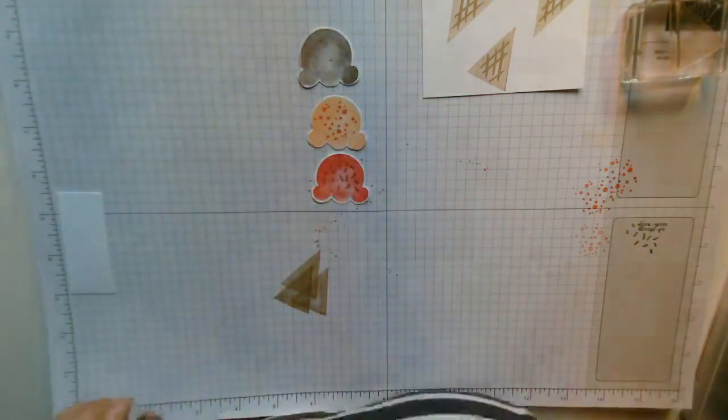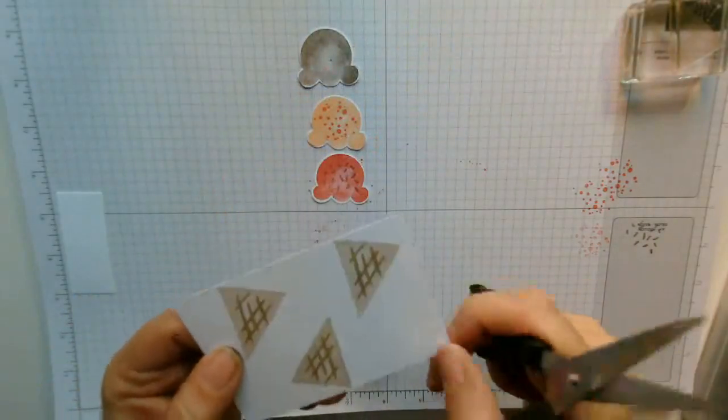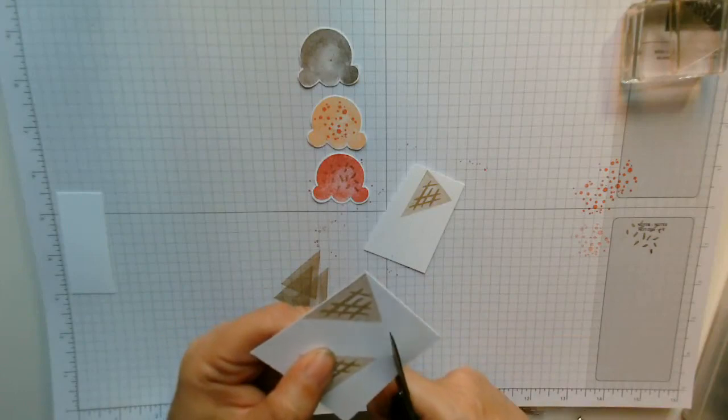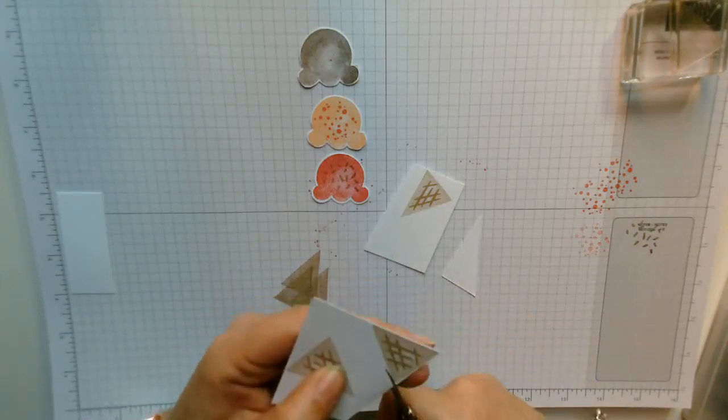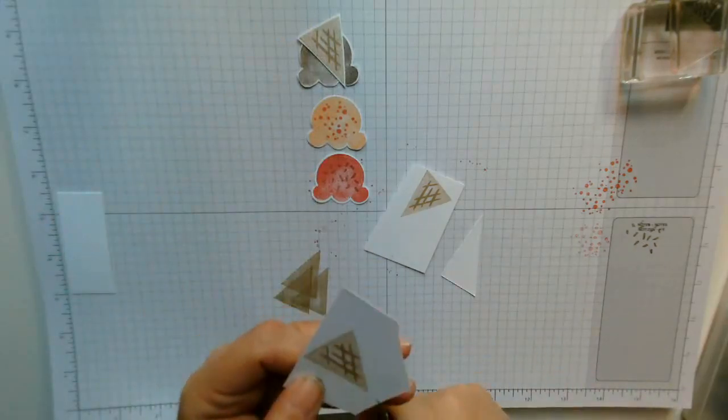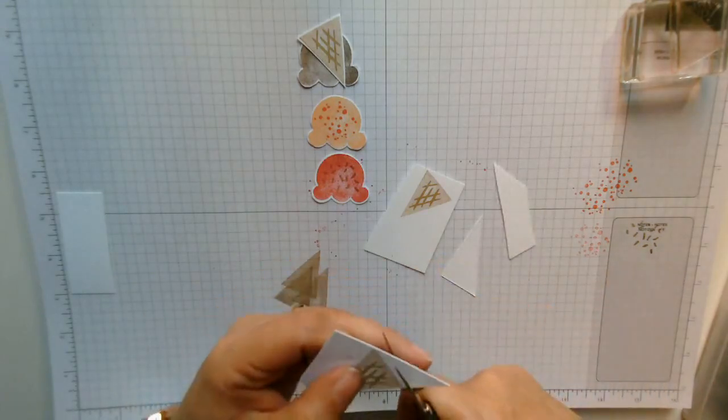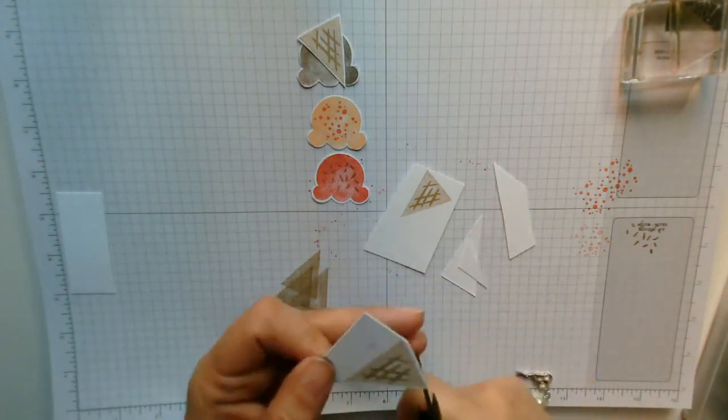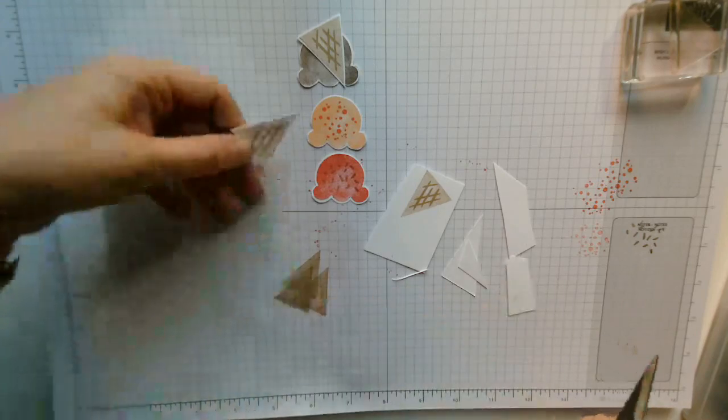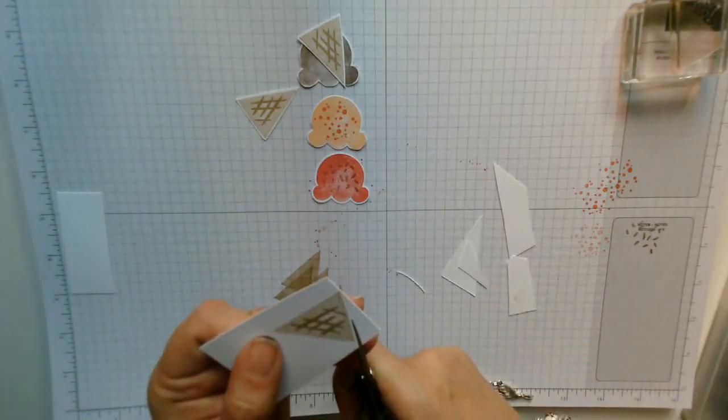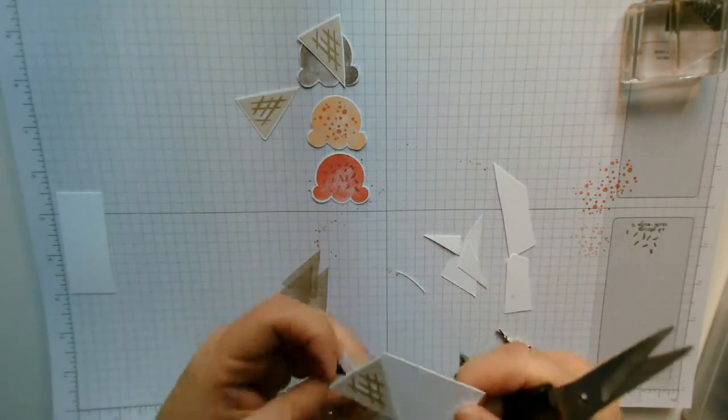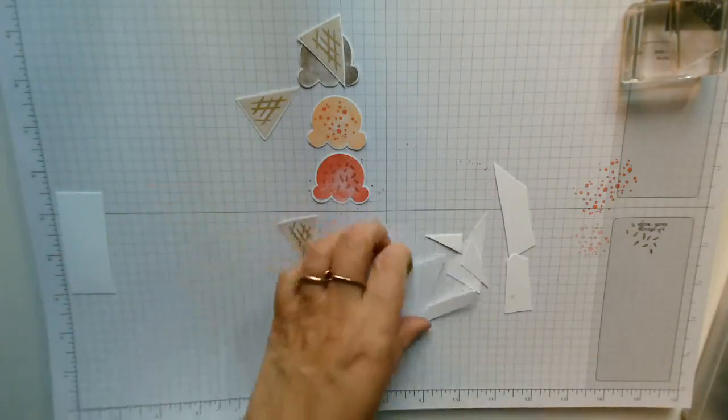Of course we can do the same with the cones which obviously will be a lot easier as they are just straight lines. Of course it is easier to use the punch, less time consuming. There we go so there's the third one and then I will bring in my three cones so straight down. There. That's one. Lovely.